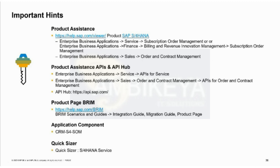Q&A: 'Can a phased contract be created from a Fiori solution quote, or only through the solution quotation API?' Answer: for the time being it can only be created via the solution quotation API, and phased contracts via subscription order are not supported with this release.